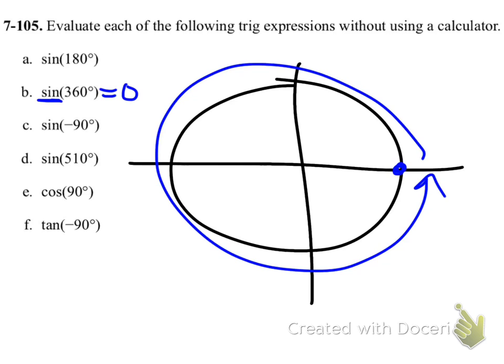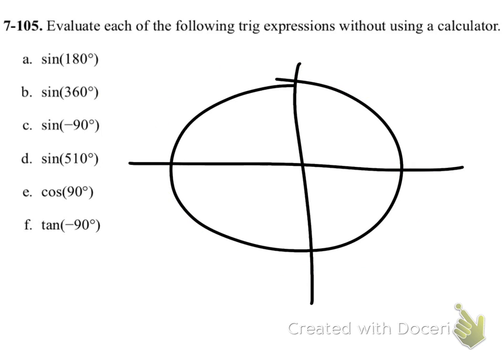For problem C, I now want negative 90 degrees. All right, so negative 90 is just going backwards 90 degrees. So right here, that is my angle right there. So if I do that, the height now is this length, which is now going to be negative 1.